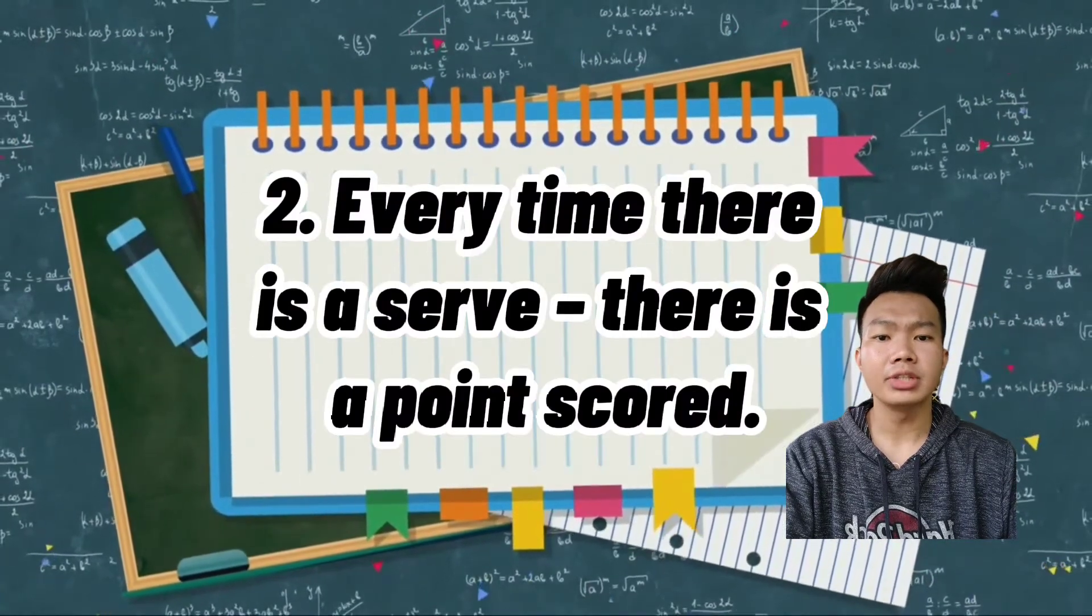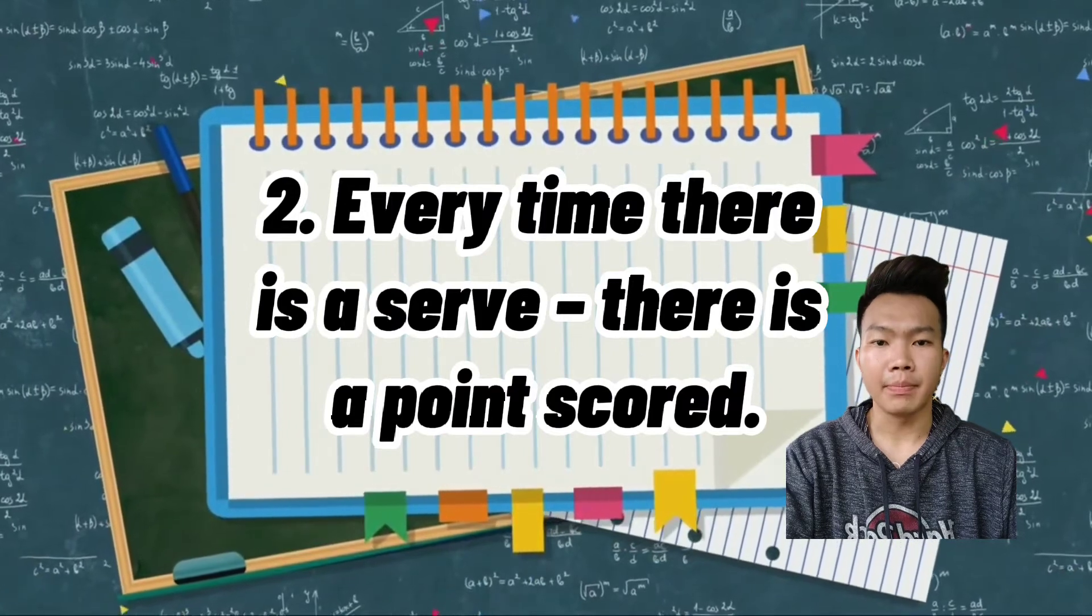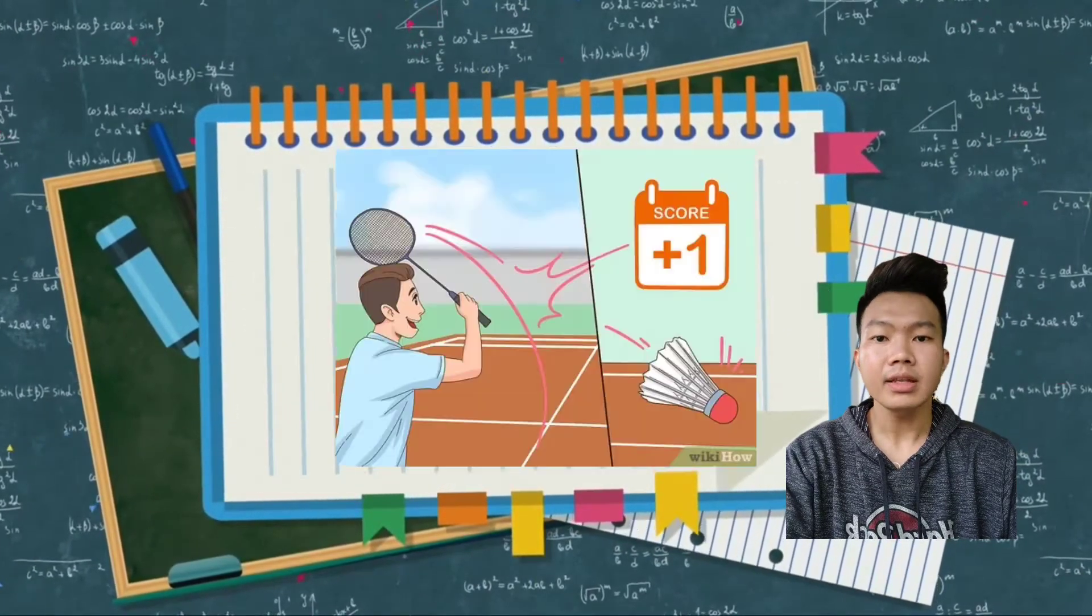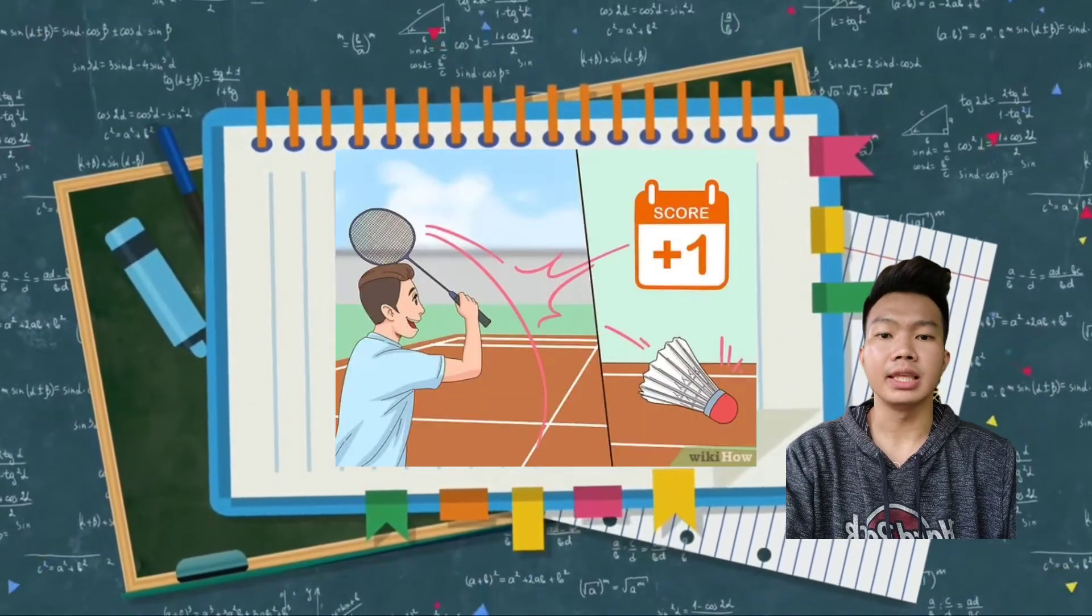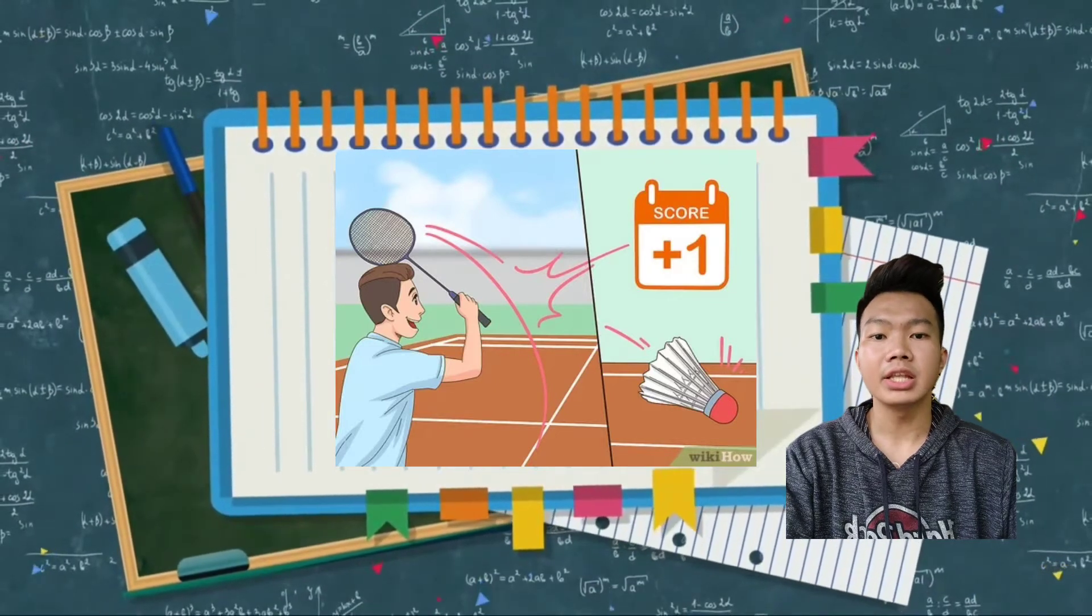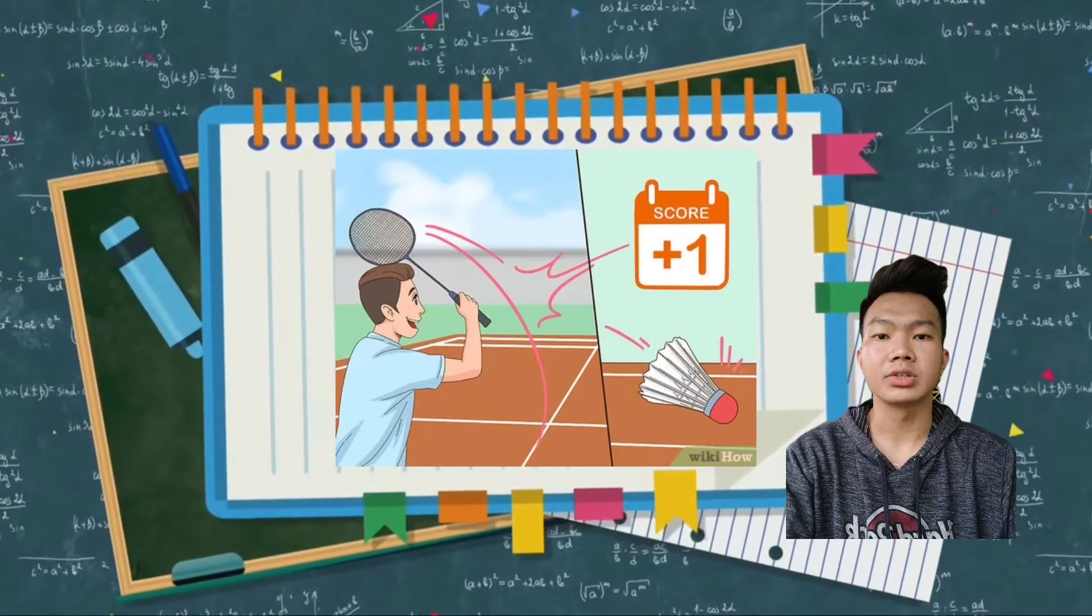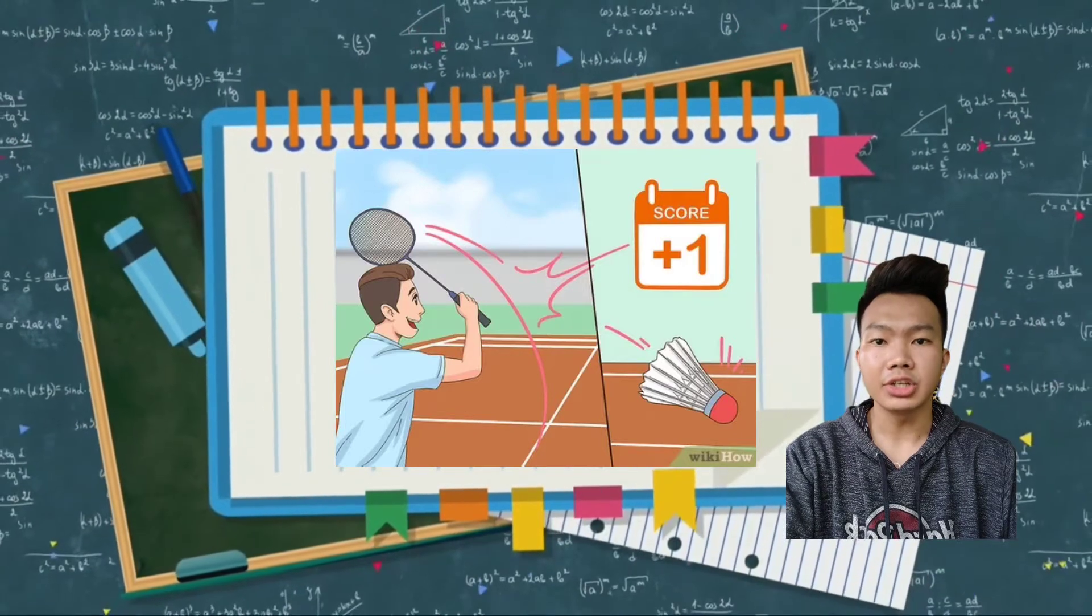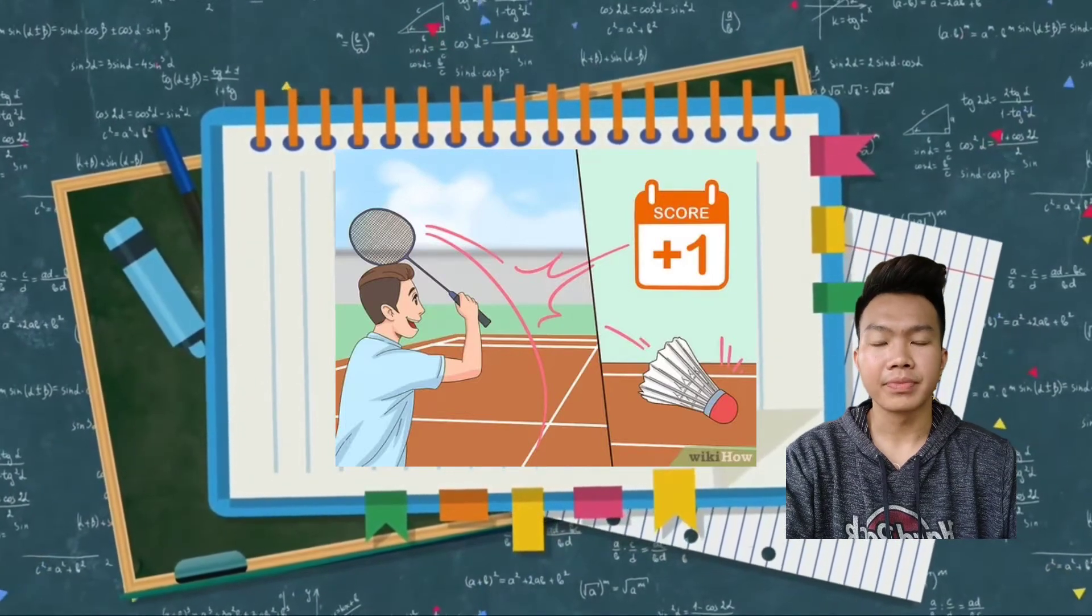Number two, every time there is a serve, there is a point scored. It is self-explanatory that if a player serves and the rally begins, there is a chance for someone to gain a score. Kapag may nag-serve, may score.